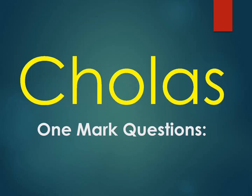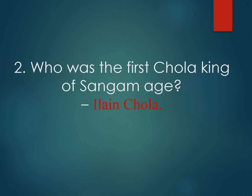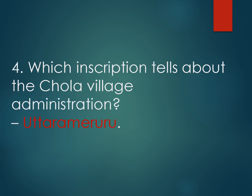Welcome to the History class on Cholas. In this class we will revise one-mark and two-mark questions from the chapter on Cholas. What is meant by Sangam age? It means Literary Union. Who was the first Chola king of the Sangam age? The answer: Ilain Chola. Who built the Raja Rajeshwara temple at Tanjore? The answer: Raja Raja Chola I. Which inscription tells about the Chola village administration? The answer: Uttaramerur.